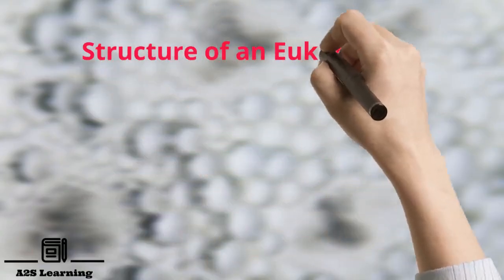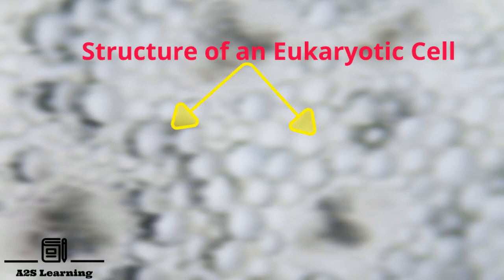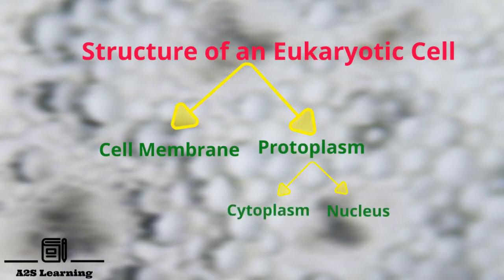Structure of an eukaryotic cell: The cell can be divided basically into two main parts, cell membrane and protoplasm. Protoplasm has two distinctions, the nucleus and cytoplasm.